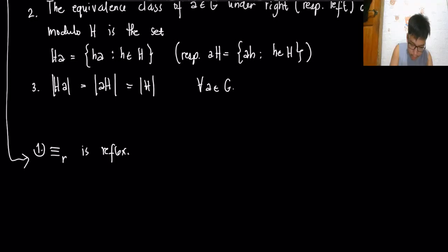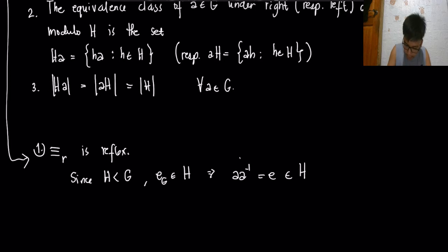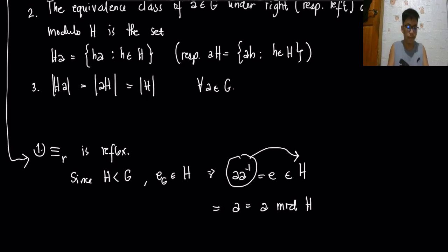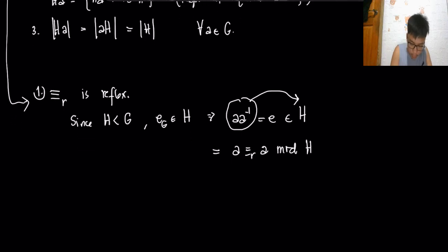For reflexivity: since H is a subgroup of G, the identity element e_G is in H. Thus aa⁻¹ = e is in H, which means ab⁻¹ (with b = a) is in H, so a is congruent to a mod H. Therefore the relation is reflexive.